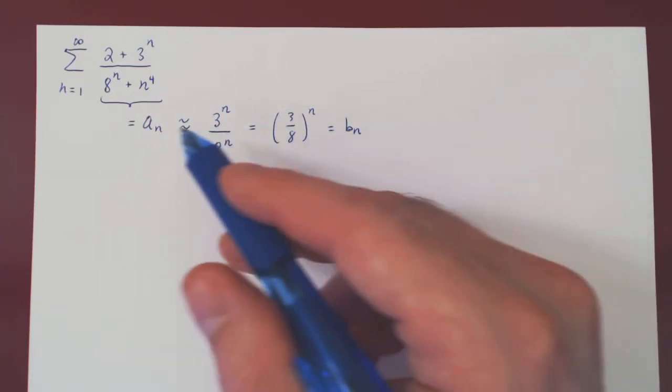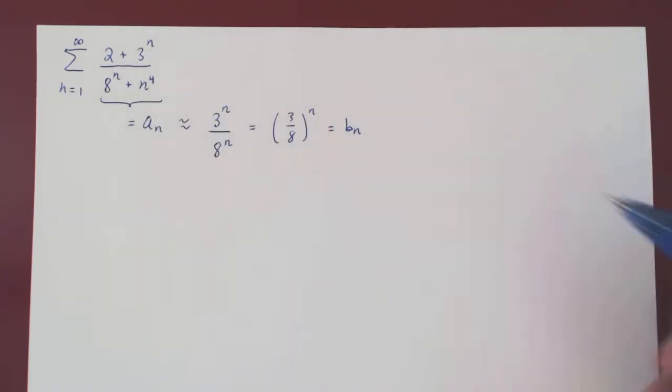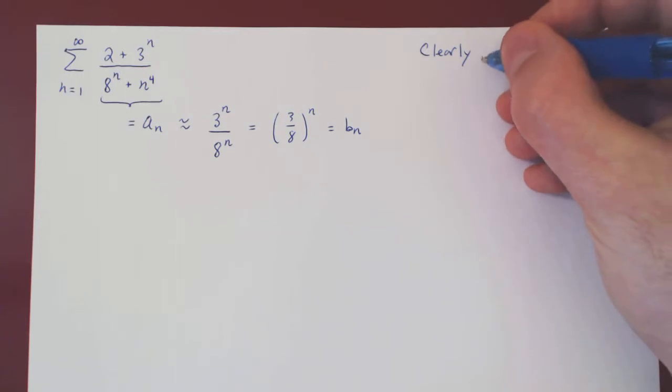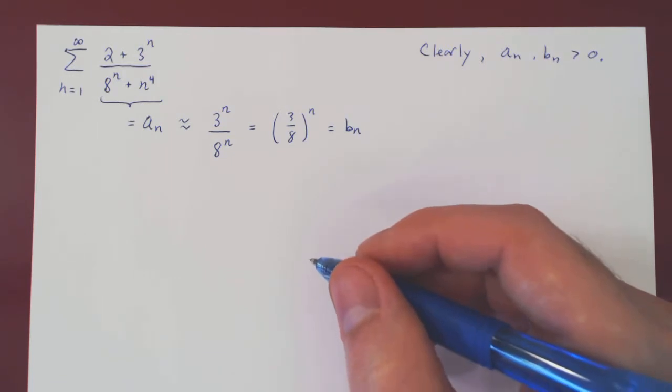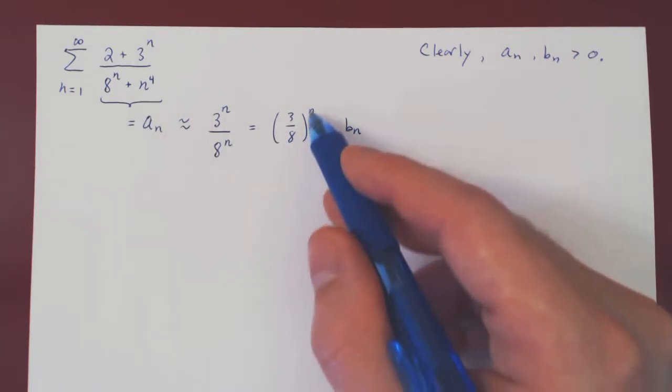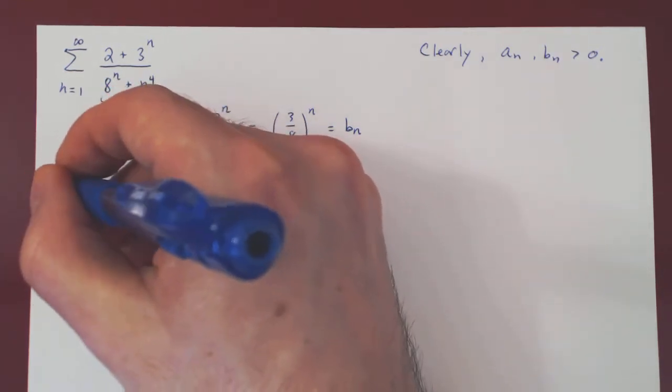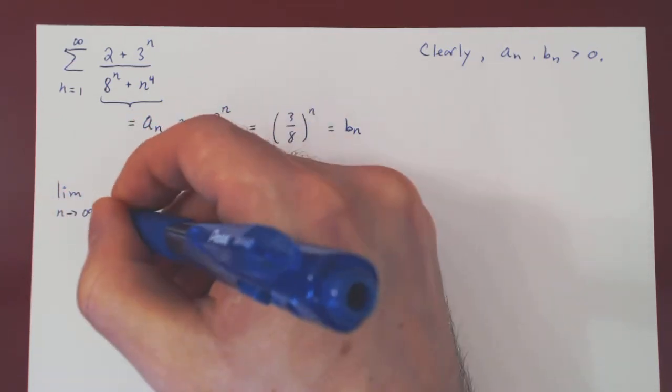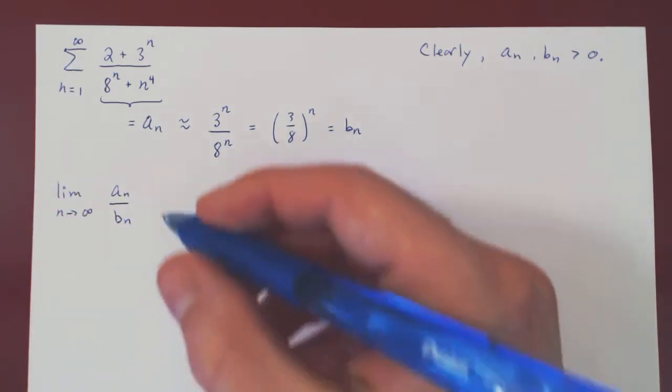So we have to verify now that the two conditions are met. The first condition is trivial, that a_n and b_n are both positive. This is obvious. And the second thing to check is that our intuition is correct, that indeed when n is large, a_n is roughly 3 over 8 to the n. To verify that our intuition is correct, we simply have to evaluate the limit as n approaches infinity of a_n over b_n. If this limit is positive, our intuition is correct, and then we can apply the limit comparison test.